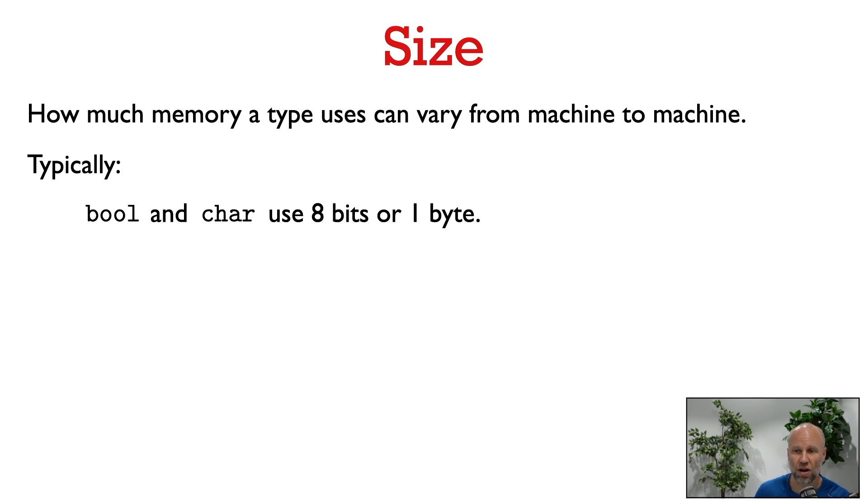Typically, bool and char use 8 bits or 1 byte. Typically, an int uses 4 bytes, so that means that an int can be in the range between negative 2 to the 31 and 2 to the 31 minus 1. So that's about negative 2 billion to 2 billion.